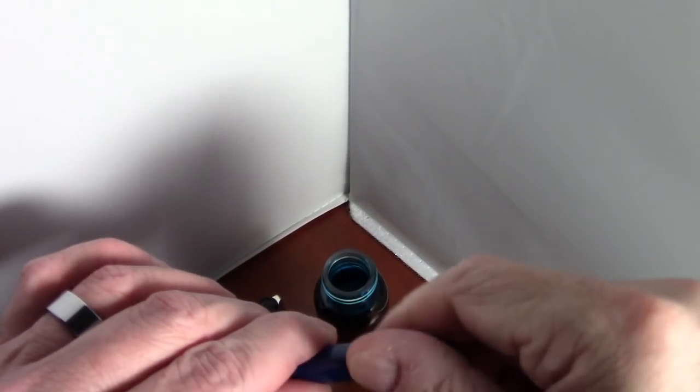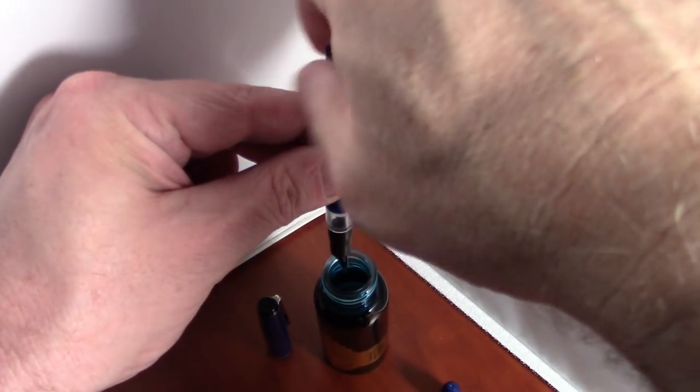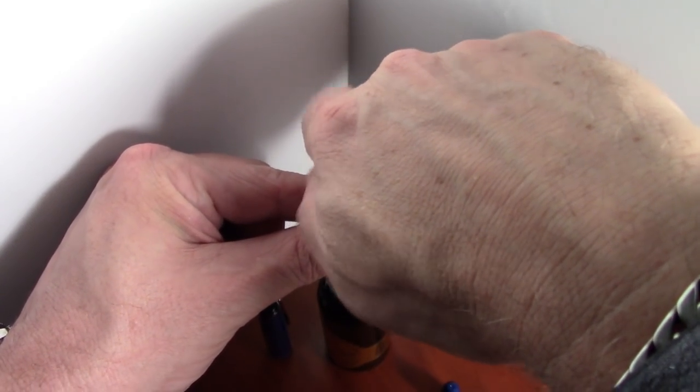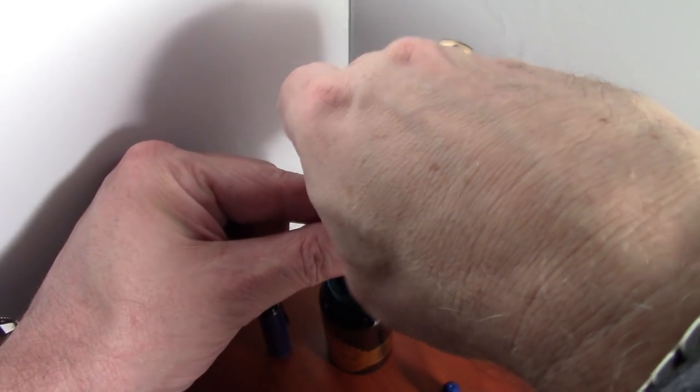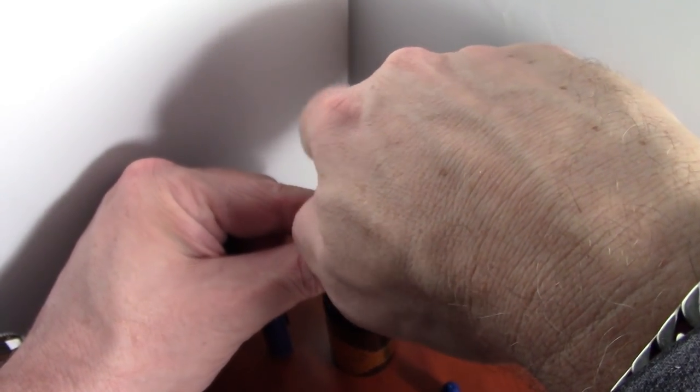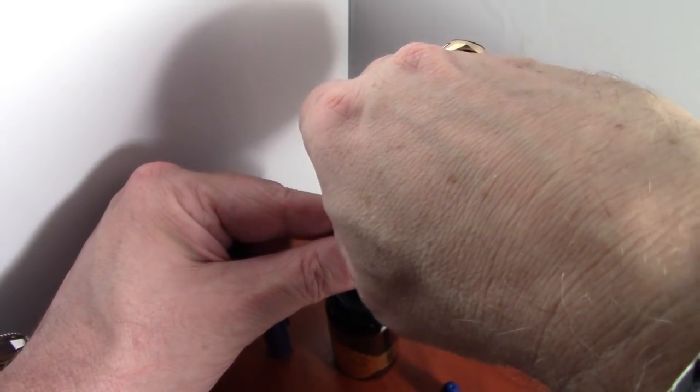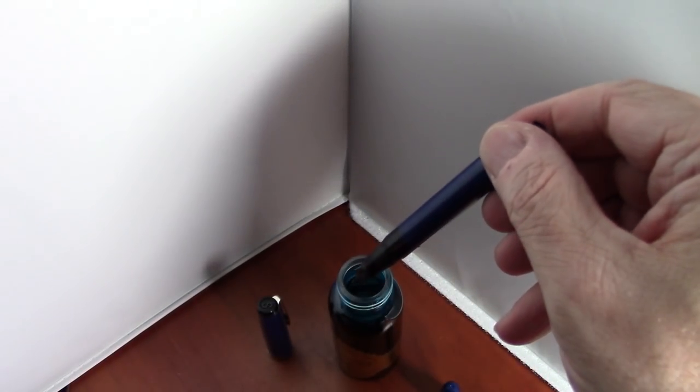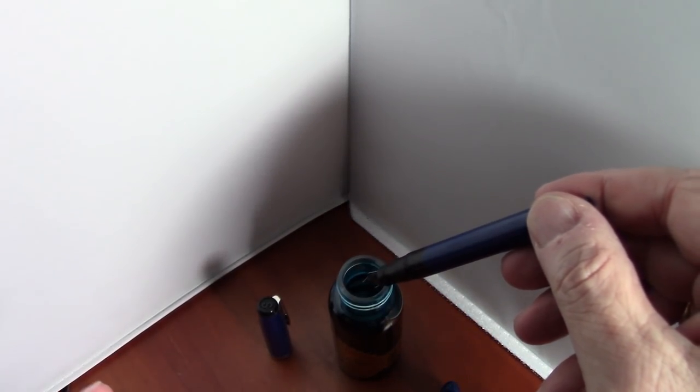Now let's try the solid body pen. This is the one with what looks to be like an oblique stub nib. It does have a nice ink window, so even though it's a solid body pen, we'll still get a pretty good idea of how well it fills. I have no reason to believe it'll be any different than the demonstrator. They seem to be the exact same mechanism. Let's just do that one last time. Three times for good luck. And there we go. And that seems to be filled also quite nicely.